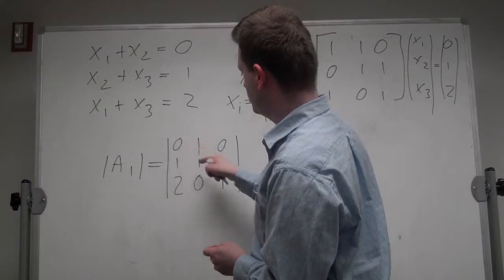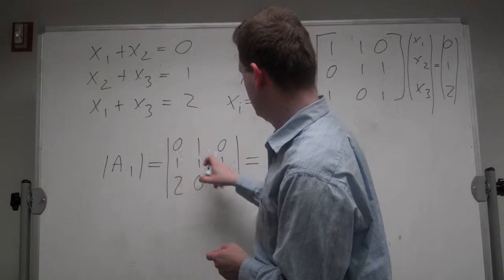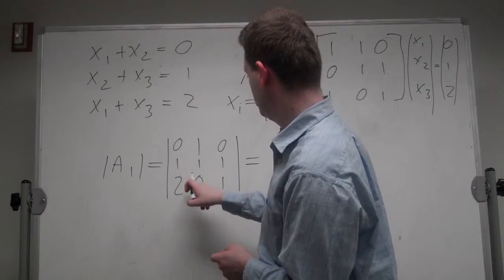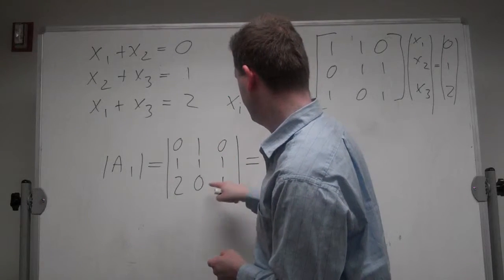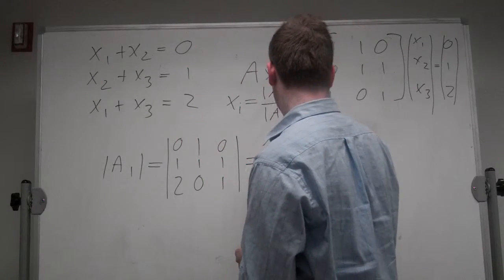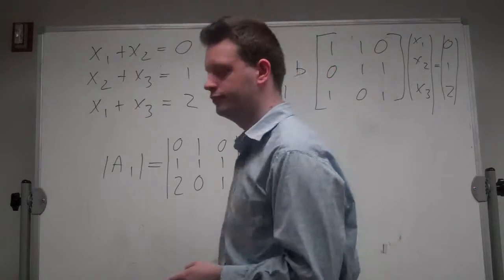Now, calculating this determinant quickly, we get 0, 2, and 0, so 2, and this one is 1, 0, and 0, which minus 1 equals 1.